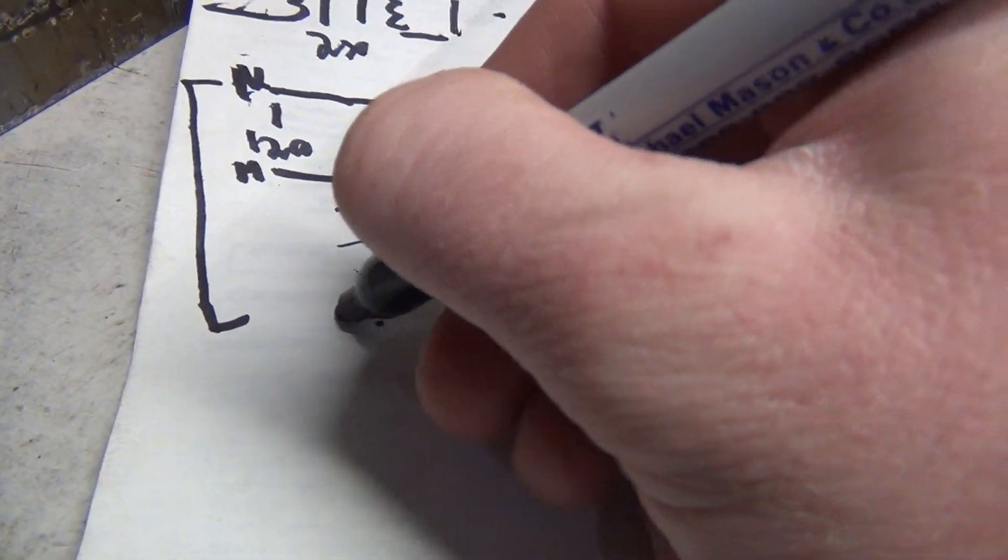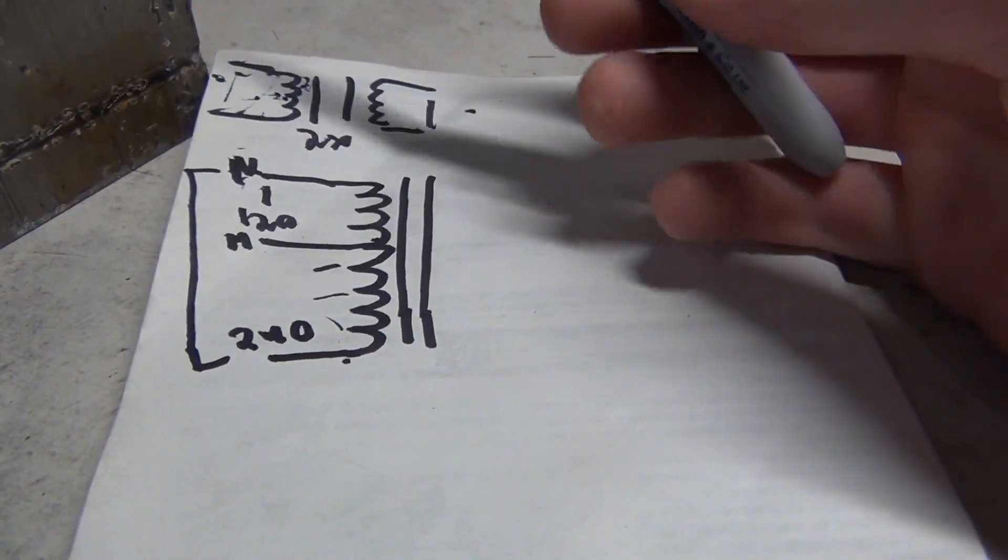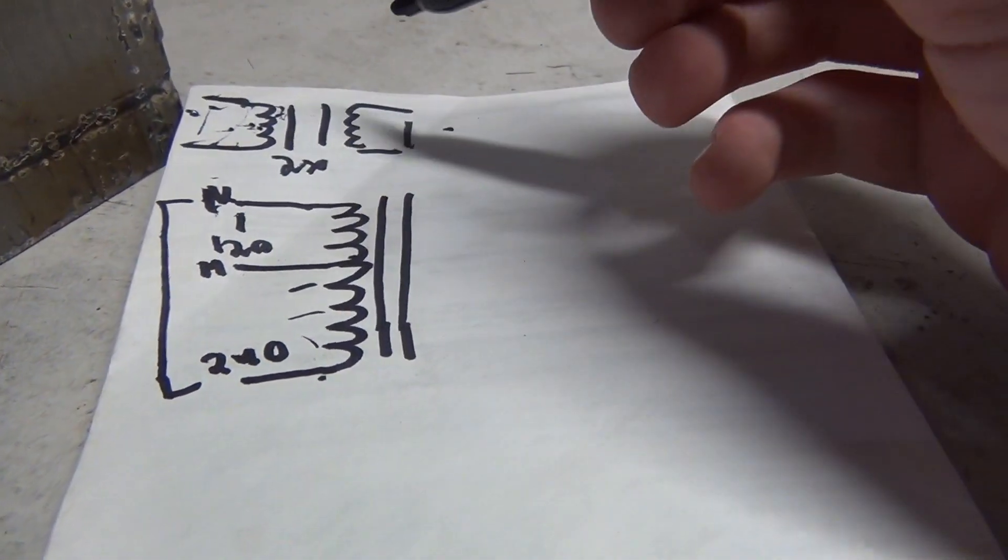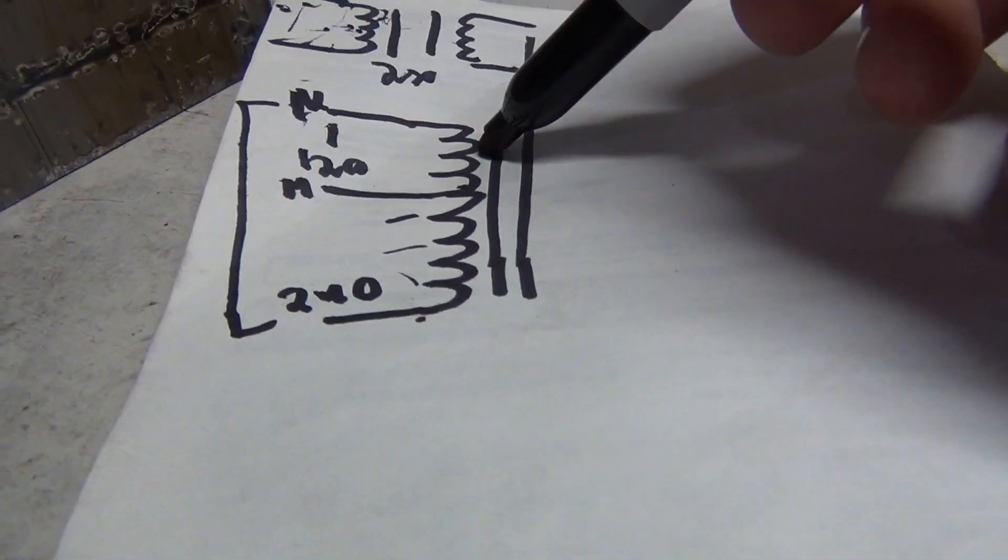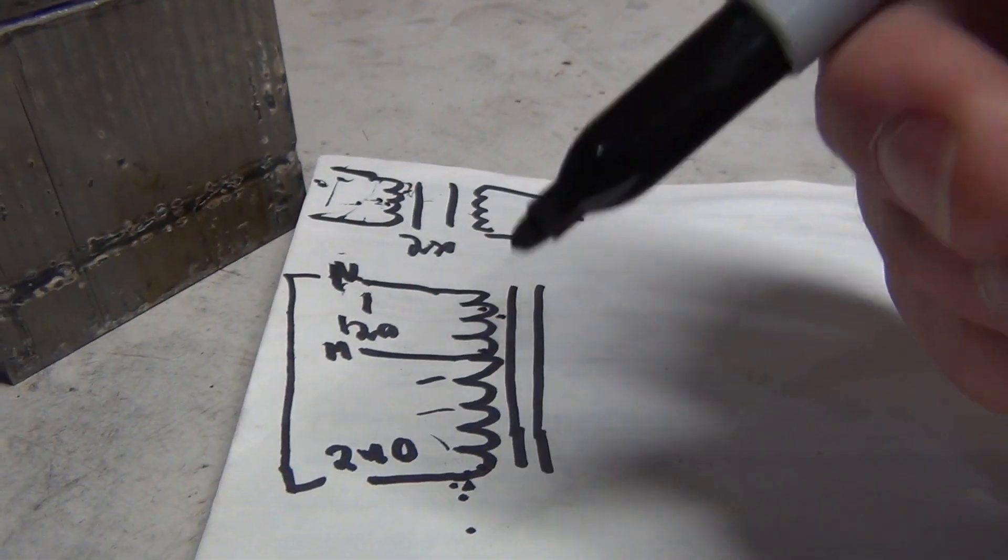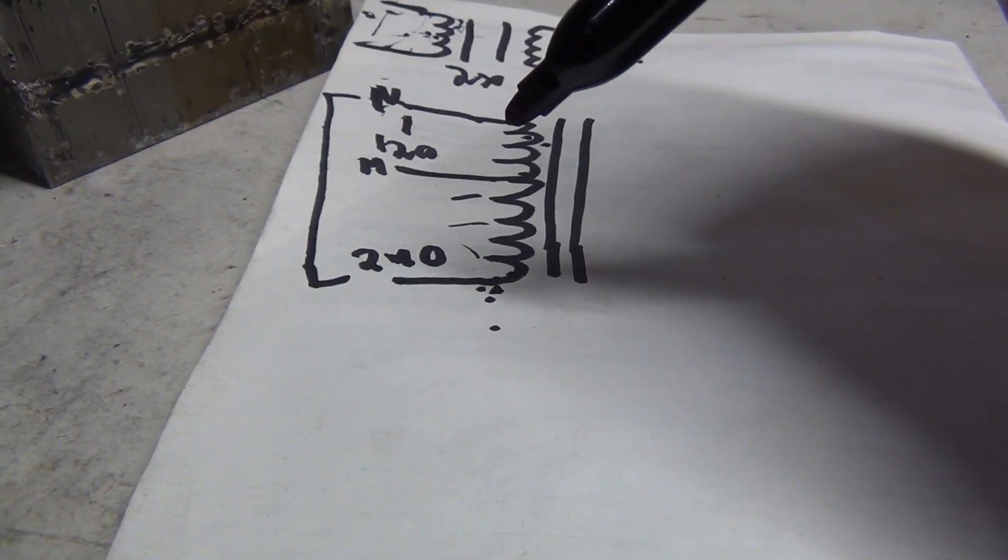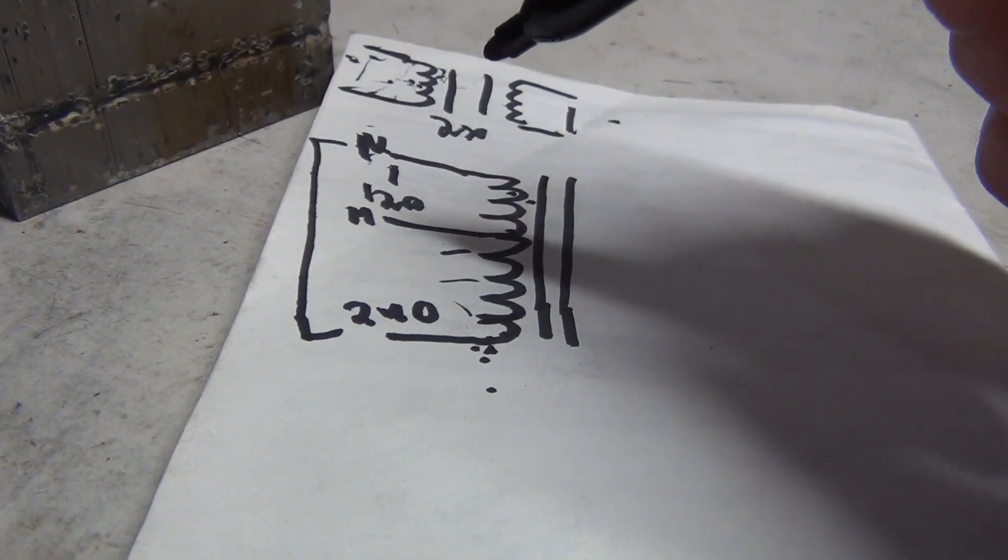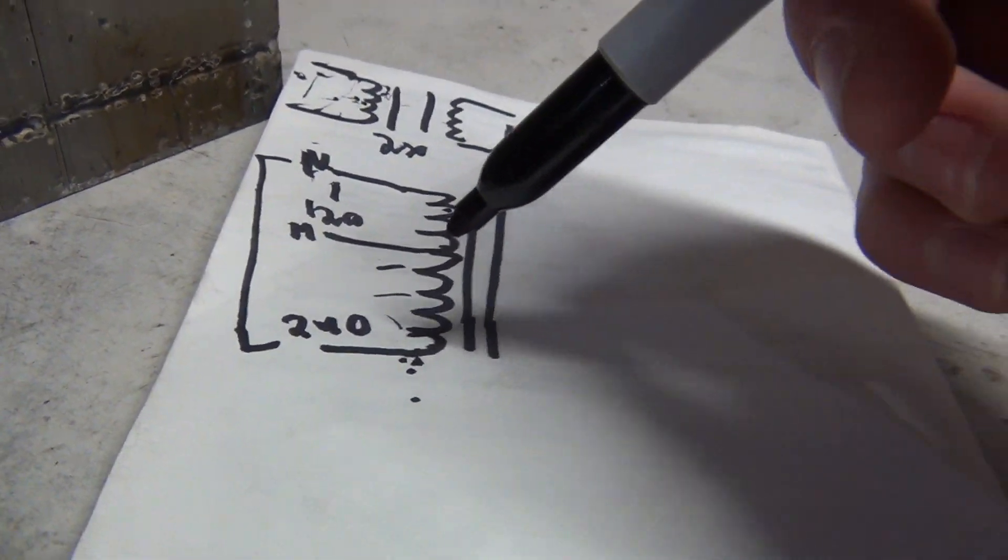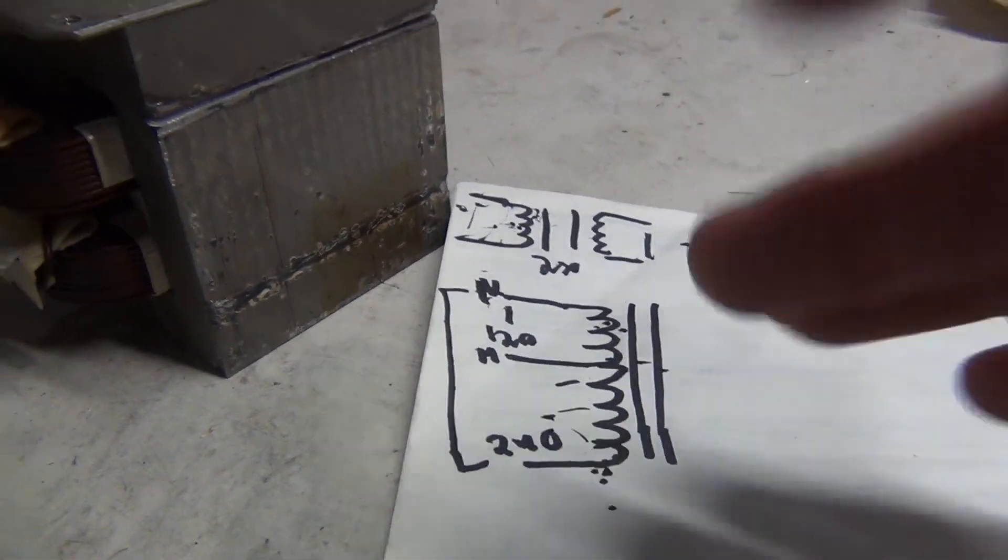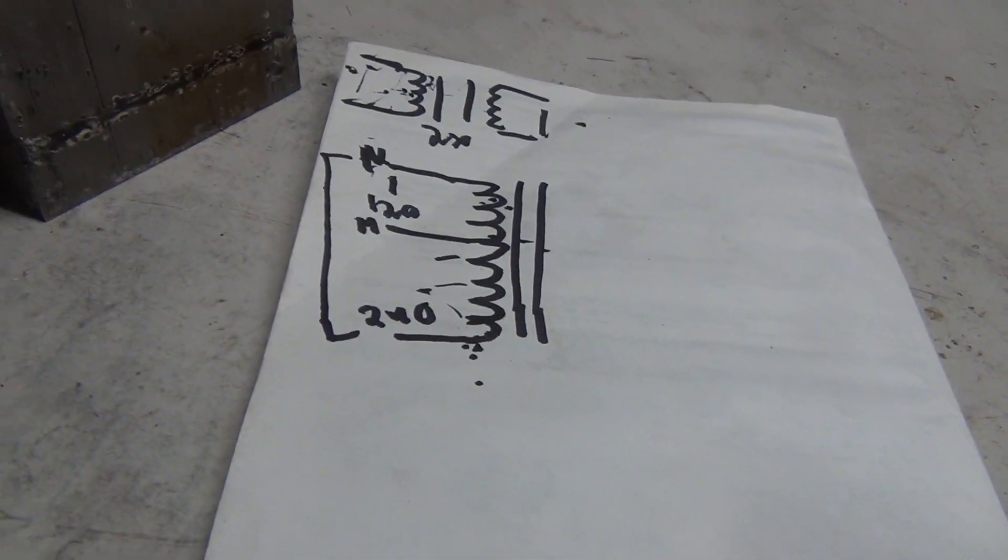So that is an auto transformer. Now it is important to note, unlike most other transformers, this has no mains isolation. There's not two separate coils - it's one coil all the way through. So you will actually get 240 volts to ground here. That's kind of dangerous, so just be aware of that. But other than that, this is actually a pretty bulletproof way to get 240 volts if need be.